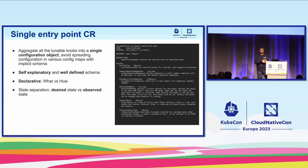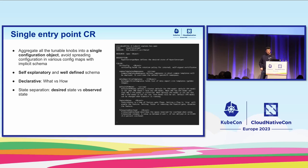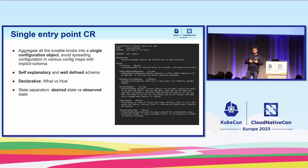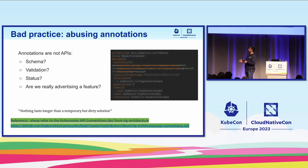The idea is to have a single entry point — a single configuration object you can use to configure KubeVirt on your cluster. This object should be self-explanatory and well-defined, with schema validation. It should be declarative — we are more interested in what we want to achieve, because the how is done by the operator. We also want a clear separation between desired state and observed state.